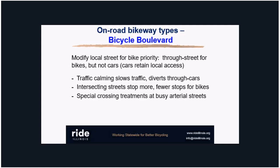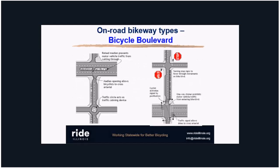Bicycle boulevards are on generally quieter streets where you provide priority for bikes to get through while making it difficult for cars — by adding traffic circles, diverters, and so on. It's a fairly niche treatment that really has to be located where you can create a bicycle superhighway to a logical destination such as a university.